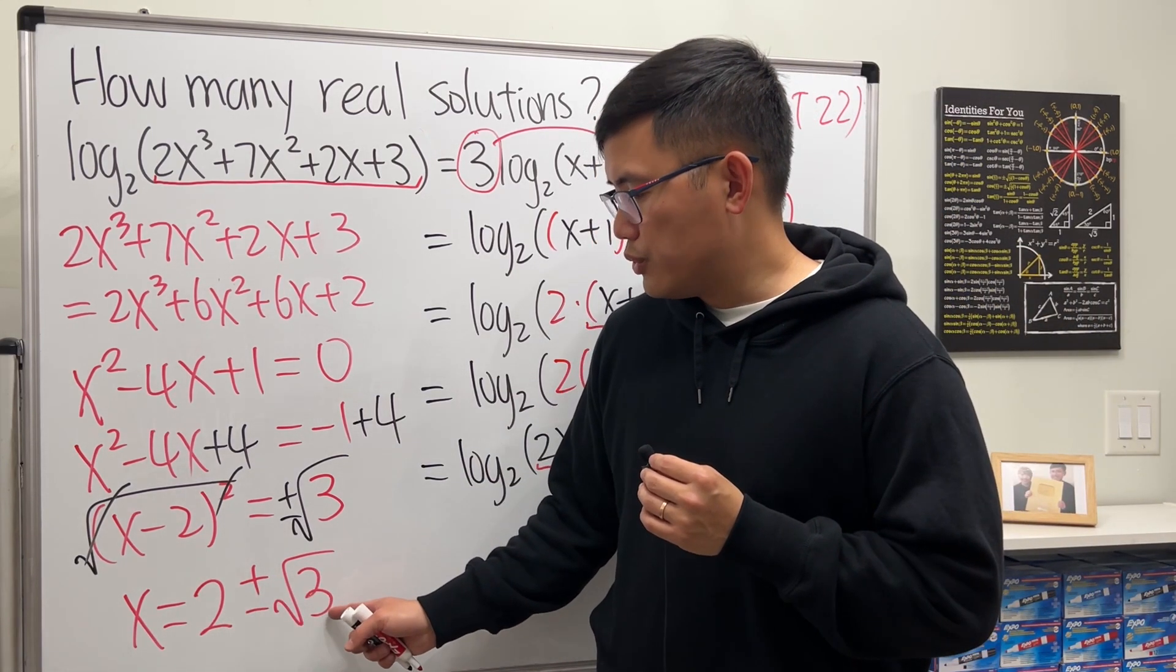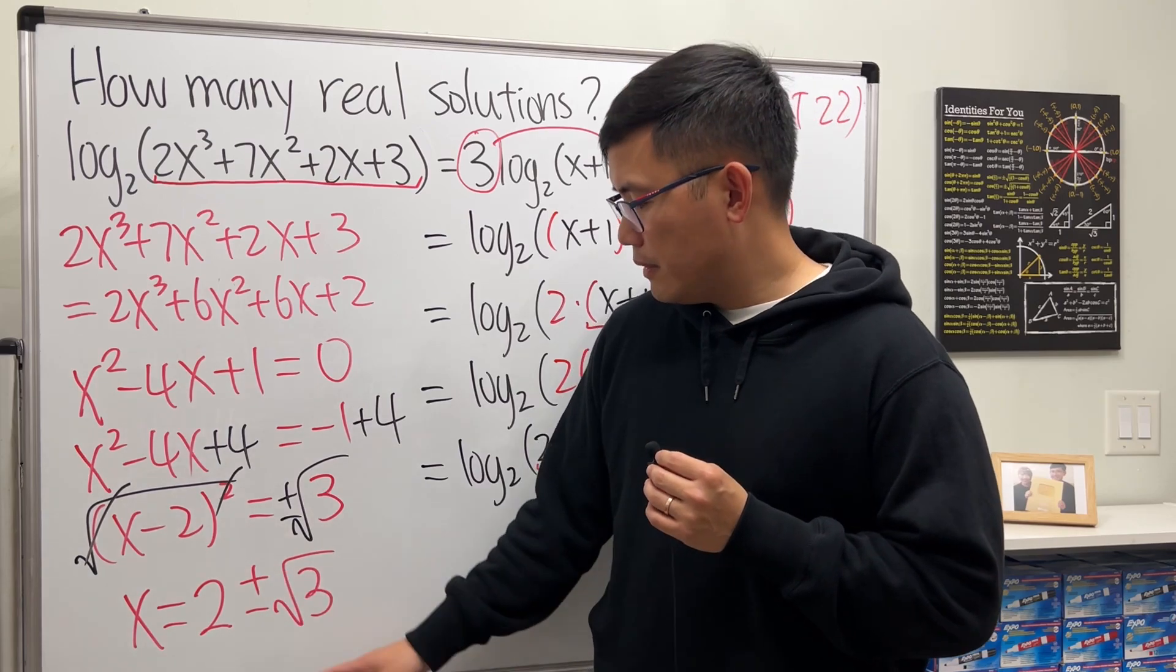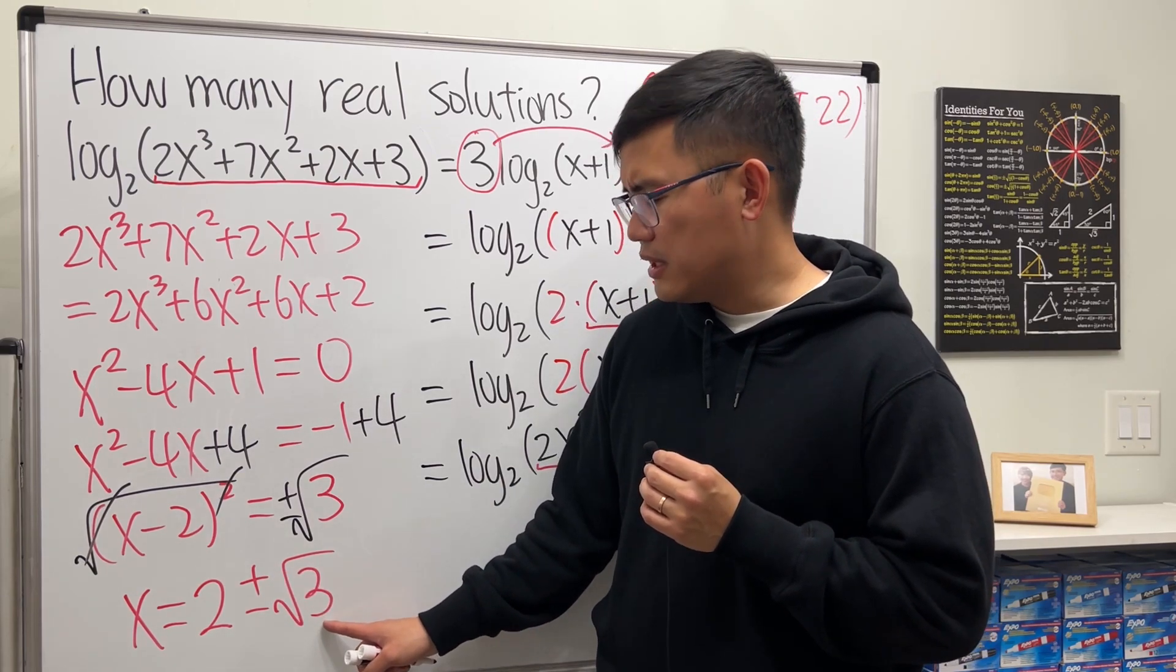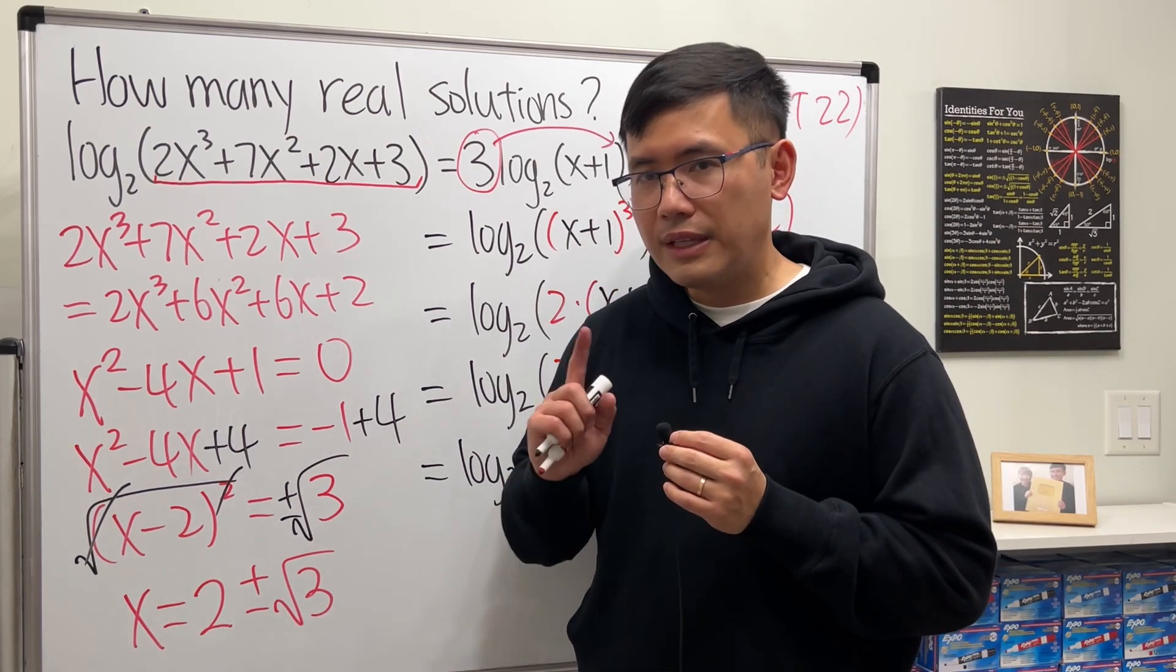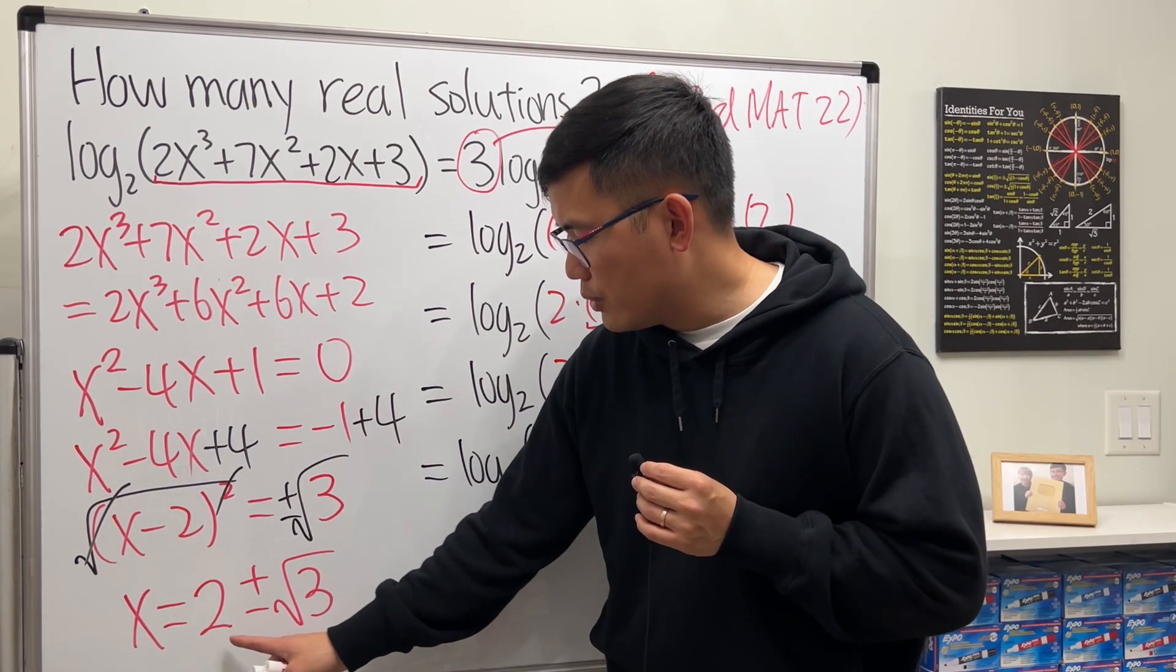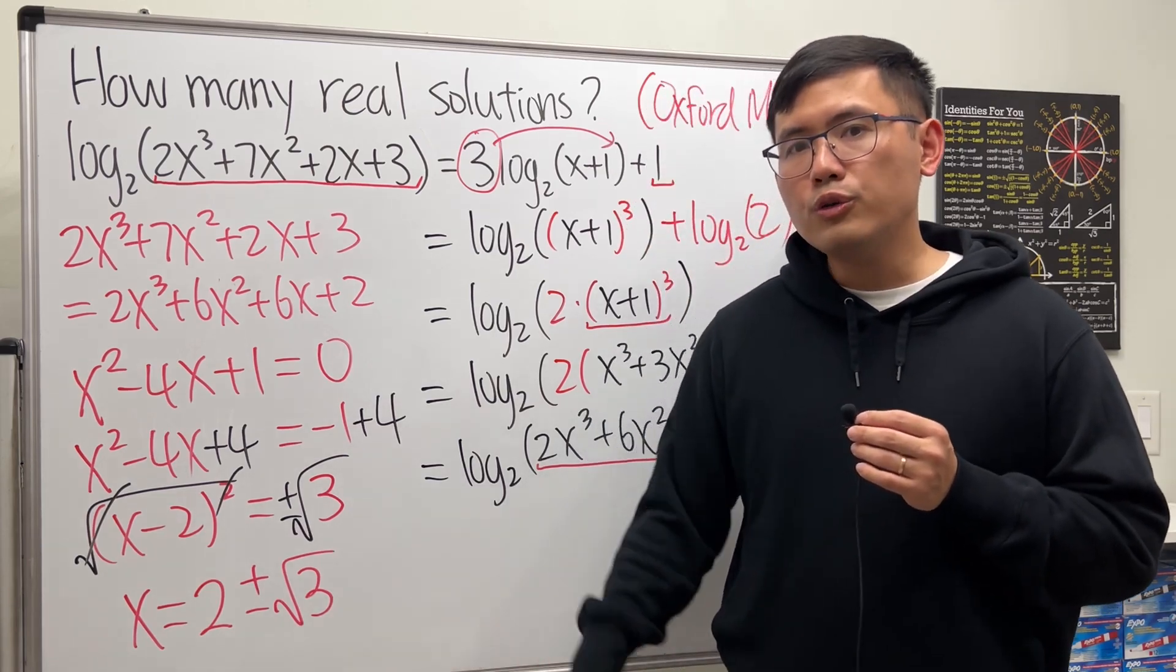Have a look right here. We know 2 + √3 has to be positive. And because √3 is less than √4, so √3 is less than 2. That means when we do 2 - √3, that will also give us positive.